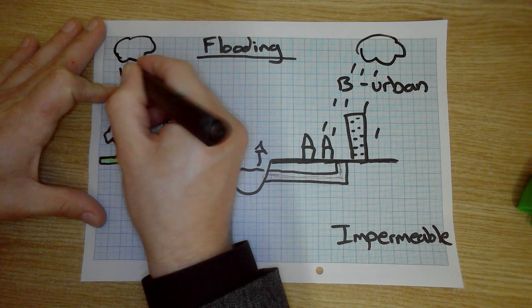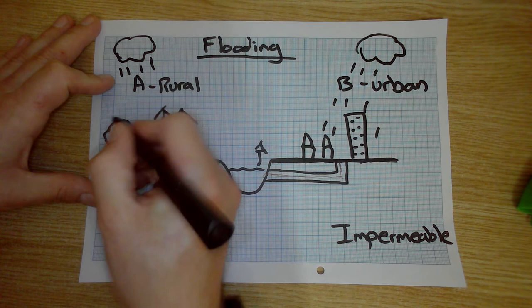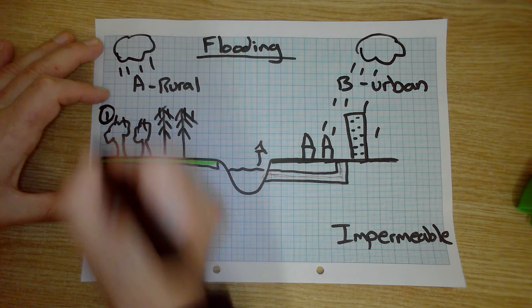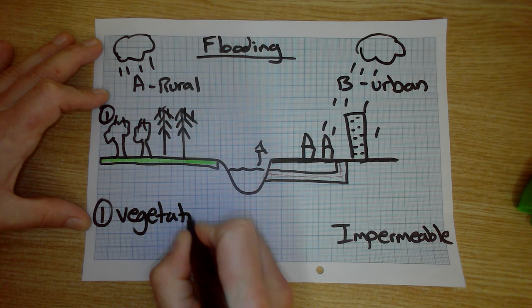Now, when it rains over here, alright, rather than just going straight to the ground, straight to the river, it hits the leaves of all the trees. So that's going to add time it takes to get to the river. So that's going to increase lag time. So if I just put a one there, you've got vegetation interception.